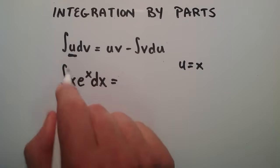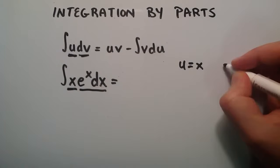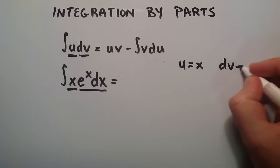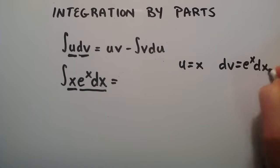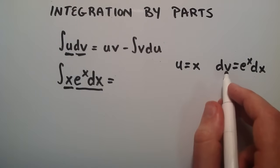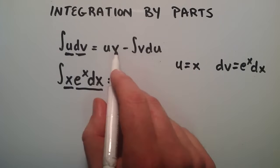Since we chose x to be our u, that means the rest of this stuff has to be the dv. So dv is equal to e to the x dx. Now that we've got our u and our dv figured out, we also need to figure out what du is and what v is.